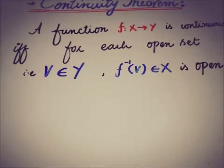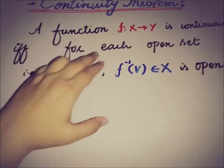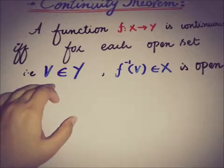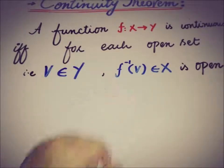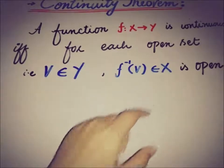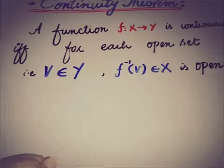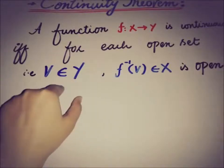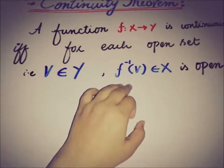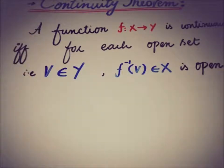There are two directions to prove. First, if f from X to Y is continuous and V is open in Y, then we have to show that f⁻¹(V) is open in X. The other direction: if every open V in Y has f⁻¹(V) open in X, then we show the function is continuous. In this video we'll focus on the first direction and in the next video on the other.